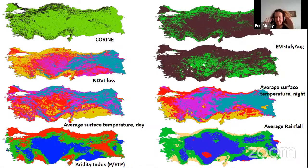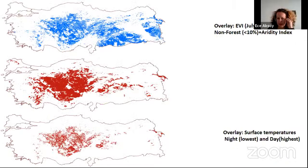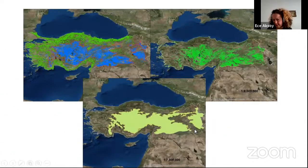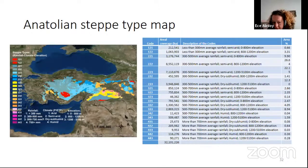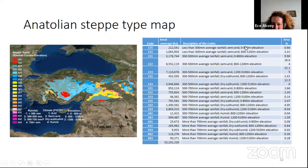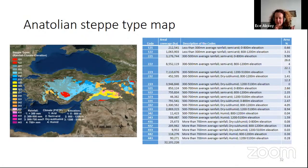Then we overlaid these final layers — we reclassified, analyzed everything and overlaid those layers to get our final borders, shown in blue. This final map is obtained by using earth observation data. This is the Anatolian Steppe border. We also give the different types of steppe. For example, the red ones are characterized by less than 300 mm average rainfall in the semi-arid region, with elevation between zero and 800 meters, while another type has similar characteristics but at higher elevation.